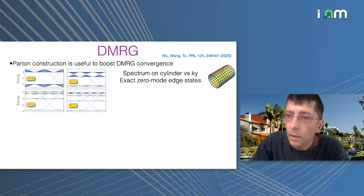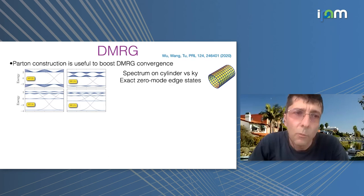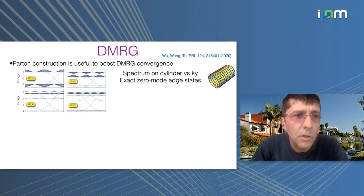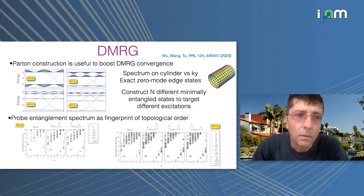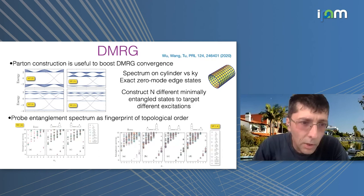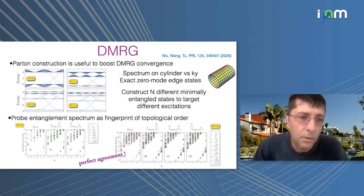Now for tensor networks: first the DMRG. Here I'm more specific about the trick by Gu and collaborators. We have a parton construction: you see some bands of the fermionic model with a Chern number, the bottom negative-energy states, and you also see the crossing at zero energy which tells you about edge states (the calculation is done on a cylinder). You can use these edge states to construct different starting points to target different excitations. With DMRG you also get the entanglement spectrum for free. Here are two examples for SU(3) and SU(4): you see a very nice, linearly dispersing chiral branch corresponding to the CFT counting for the corresponding SU(N).